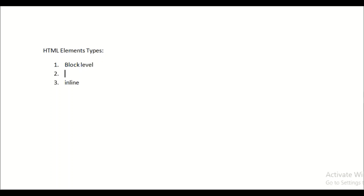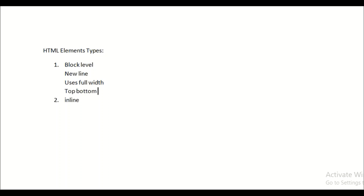Block level elements always start with a new line. They use the full width of the line, meaning from the left side to the right side, as far as it can go. They also have top and bottom margins — these are the characteristics of block level elements.